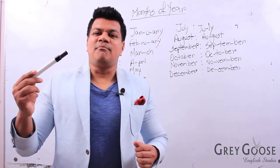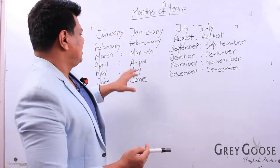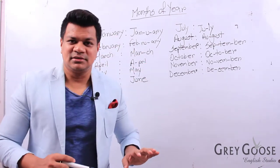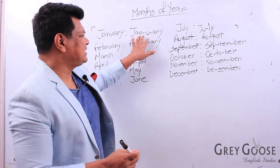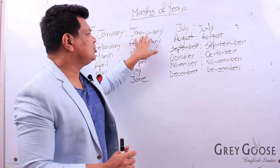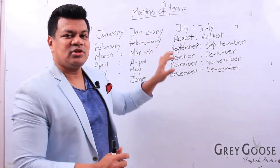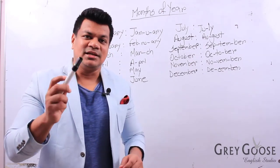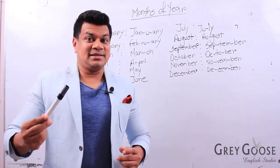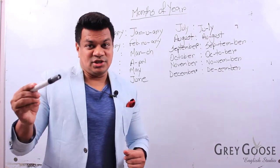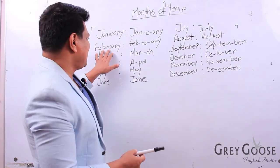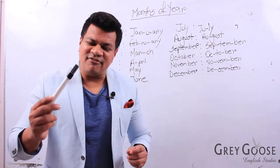As we know, there are 12 months in a year. Let's start with the first one: January. I've actually broken it into syllables — Jan, and then you, and then are. I'm not saying 'January' but 'January.' When you pronounce that quicker, it sounds like this: January, January, January.